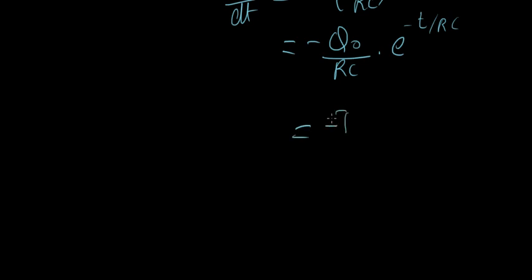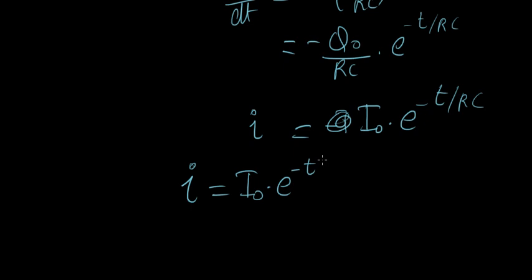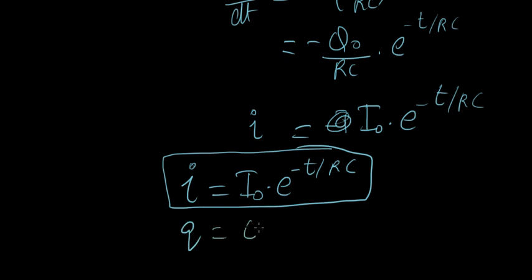So negative, I mean, so this can be termed as I0 times E power minus T over RC. All right, so let me write that down again. I equals I0 E power negative T over RC. This is the equation for current. And as we did for charge, Q equaled Q0 E power negative T over RC.